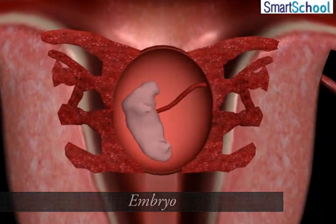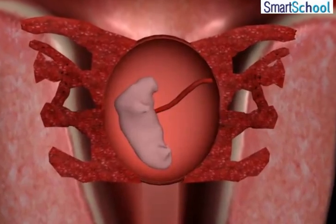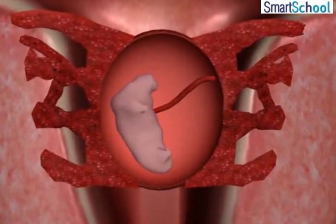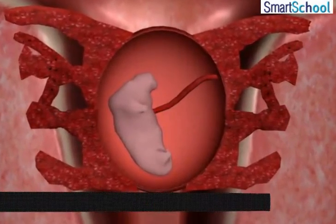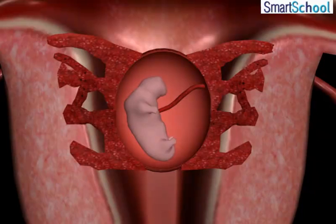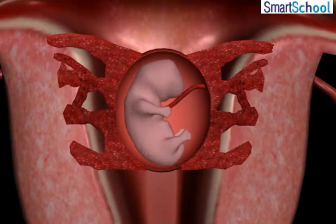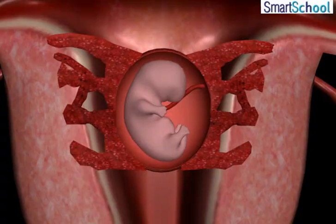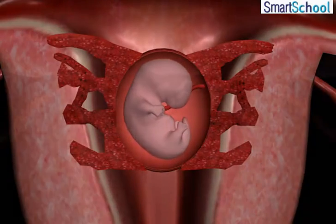The embryo then embeds itself into the wall of the uterus. This process is called implantation. The embryo continues to develop in the uterus and gradually develops body parts such as hands, legs, head, eyes, and ears.